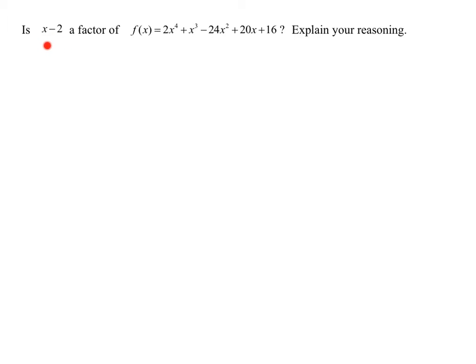In this problem, we're asked to decide, is x minus 2 a factor of this fourth degree polynomial here? And then we need to explain our reasoning. So remember, x minus 2 is a factor of f of x means exactly the same thing as x minus 2 equals 0 or x equals 2 is a zero of a polynomial f of x.